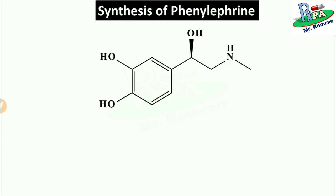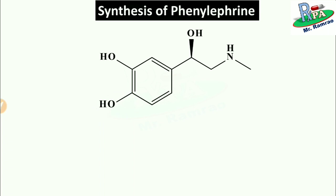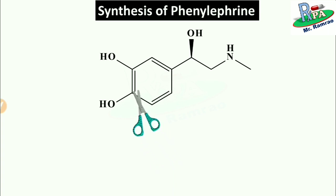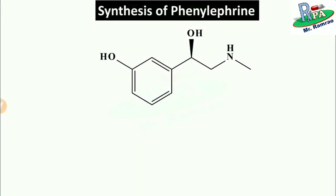First let's check whether you know the structure of phenylephrine. Is this the structure of phenylephrine? If your answer is yes then it's wrong. Because the structure shown here is epinephrine, which is also known as adrenaline. If you remove the para-hydroxyl group from epinephrine then it becomes phenylephrine. Now you know the structure of phenylephrine.